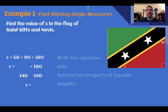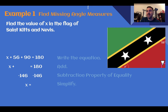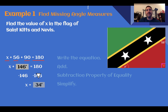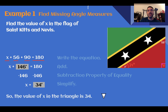Example one — find missing angle measures. Find the value of X in the flag of St. Kitts and Nevis. Angle X is part of this triangle with other angles of 56 and 90 (the box indicates 90). The three angles add together to equal 180. So 56 and 90 together is 146; subtracting from 180 leaves 34 degrees. The value of X in this triangle is 34.